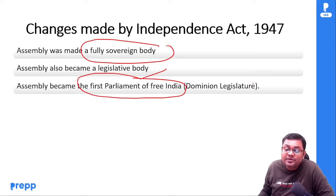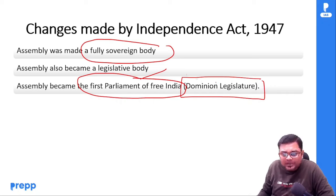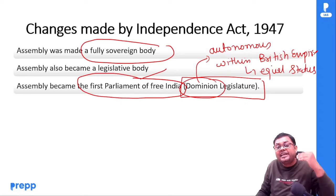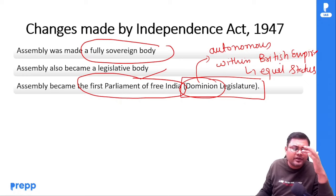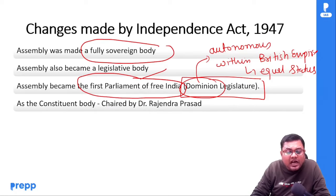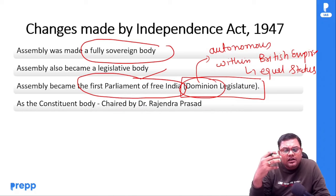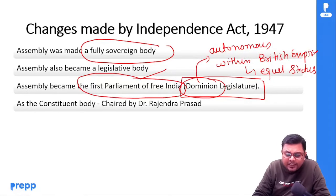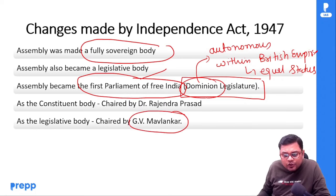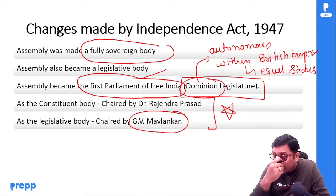Dominion का मतलब है autonomous within British Empire — means आपका equal status होगा, but आपकी allegiance रहेगी to the British crown। जब आप constitution बनाने का काम करोगे तब Dr. Rajendra Prasad chair करेंगे, और जब legislative body का काम करोगे तब G.V. Mavalankar chair करेंगे। यह भी question पूछा जाता है। यह दोनों functions continue होते हैं till 26 November 1949।